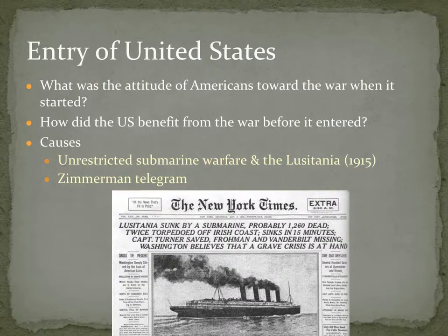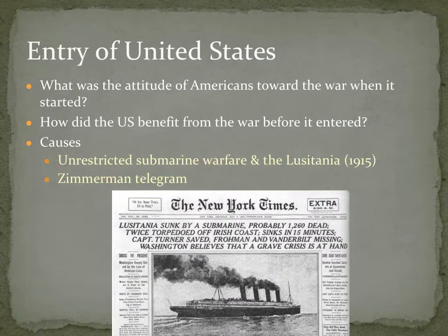Another issue is the Zimmermann telegram — an intercepted message supposedly from Germany to Mexico, asking Mexico to consider invading the United States to distract it from possibly entering the war. In return, Germany promised Mexico would get back territory it had previously lost in the southwest, like areas like Texas. Whether or not anyone was ever going to act on it, it surfaced in the American media and caused outrage. Both the Lusitania sinking and the Zimmermann telegram moved the U.S. toward entering the war, and when Germany later resumed unrestricted submarine warfare, that was really the final straw.